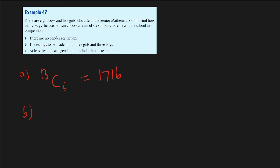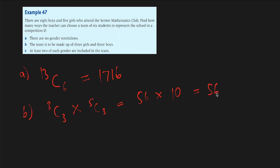For the next part, the team must be made up of three girls and three boys. Out of eight boys we have to choose three, so that's 8 choose 3 for the boys, and 5 choose 3 for the girls. Since the boys and girls are chosen separately, we multiply them together. 8 choose 3 comes out to be 56 and 5 choose 3 comes out to be 10, giving a total of 560.